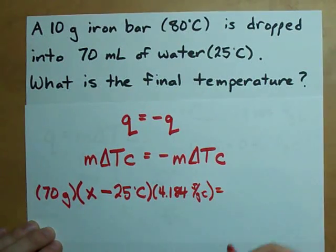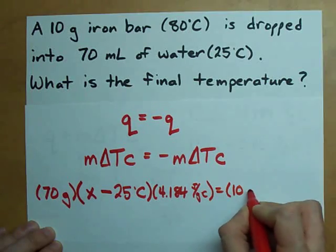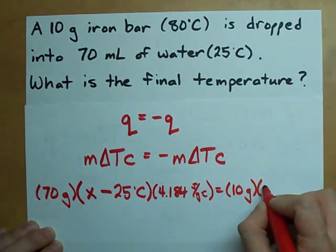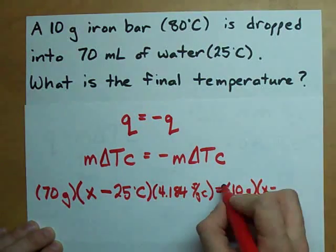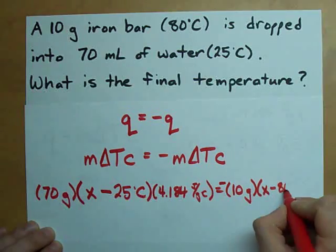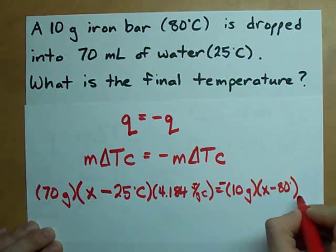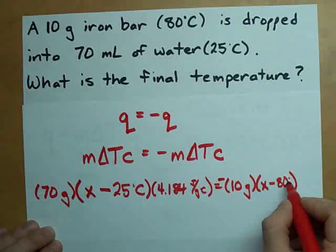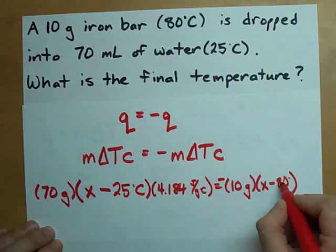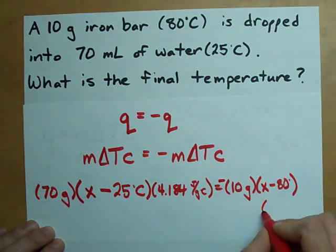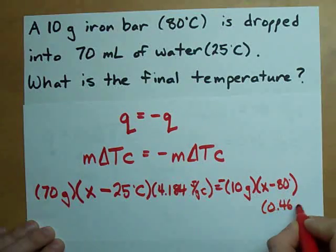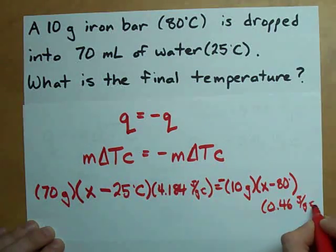Sweet. Now, I'm running out of space, but that's okay. I have 10 grams of iron. Oh, I forgot my negative out front. The change in temperature there is X minus 80. Final temperature, we don't know. And we're going to have to multiply that by 0.46 joules per gram degree Celsius.